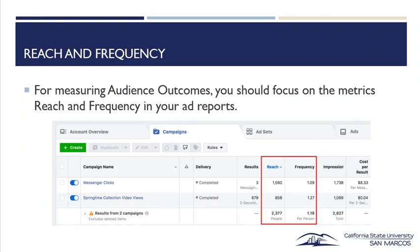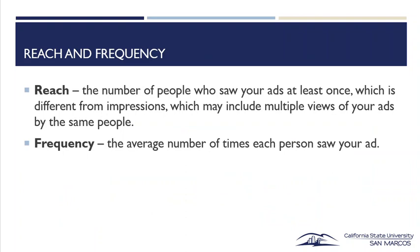Reach and frequency. For measuring audience outcomes, you should focus on the metrics reach and frequency in your ad reports. When you go to campaigns and want to see your report, reach and frequency are two columns in there. Reach is the number of people who saw your ads at least once, which is different from impressions, which may include multiple views by the same people. Frequency is the average number of times each person saw your ad — really important to know the difference.